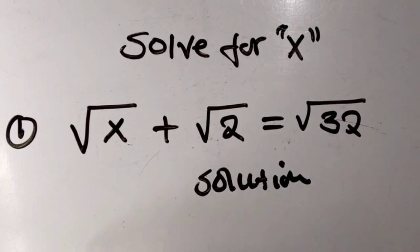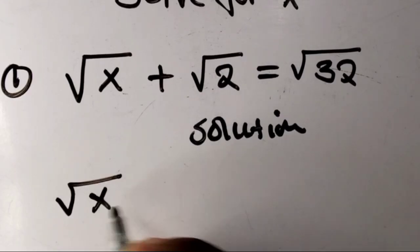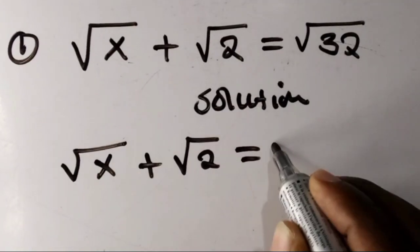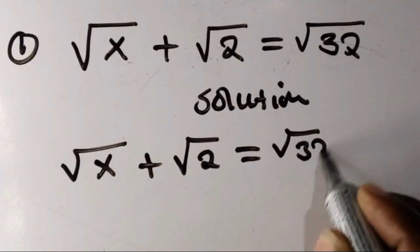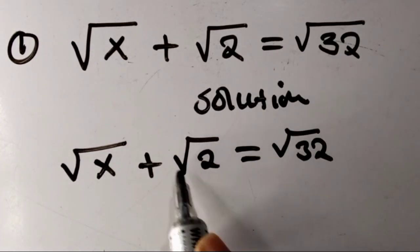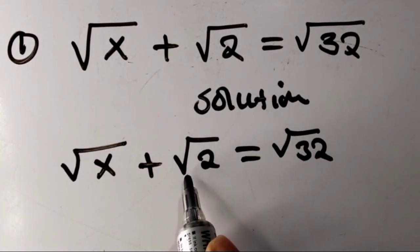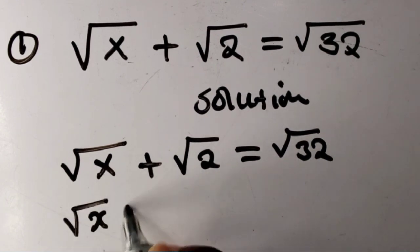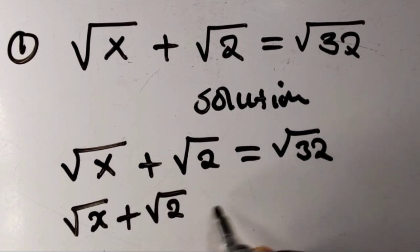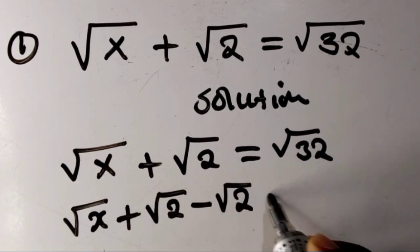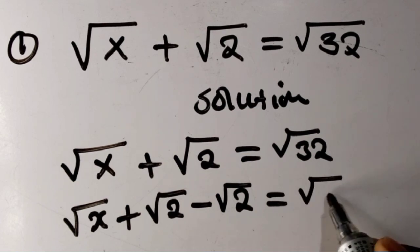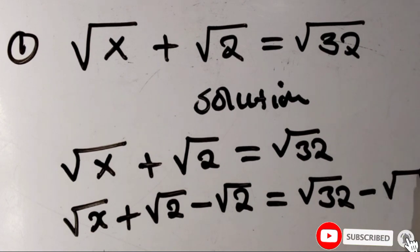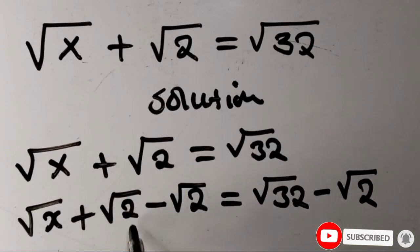First of all, we write the equation: square root of x plus square root of 2 equals root 32. Then we subtract root 2 from both sides, so we get root x plus root 2 minus root 2 equals root 32 minus root 2.